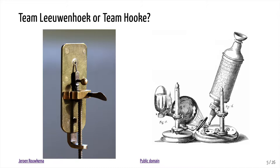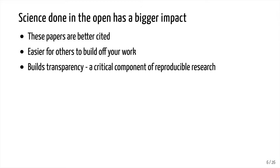Do we want to be on Team Leeuwenhoek or Team Hooke? Both are fantastic scientists — leading minds of all scientific history — and both did rigorous, strong science. But Leeuwenhoek's just wasn't reproducible, not because it was wrong, but because he wasn't transparent, because he wasn't open, whereas Hooke was. Hooke made his methods accessible and so his method took over, even if it perhaps wasn't as good as Leeuwenhoek's microscope.